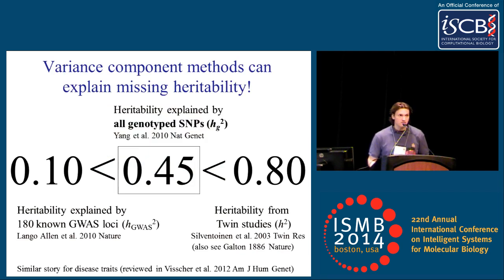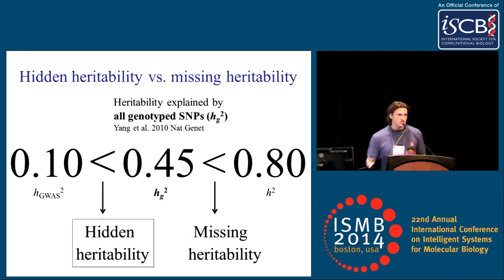In a landmark paper of Yang et al. 2010 Nature Genetics from Peter Visscher's group, they used variance components methods to estimate the heritability explained by all genotyped SNPs, not just those that are genome-wide significant. They estimated the heritability explained by genotyped SNPs, or H2G, at about 45%, putting a major dent in the mystery of the missing heritability. By way of terminology, I'm going to refer to the gap between 0.45 and 0.8 — the heritability still unaccounted for and still missing — as missing heritability.